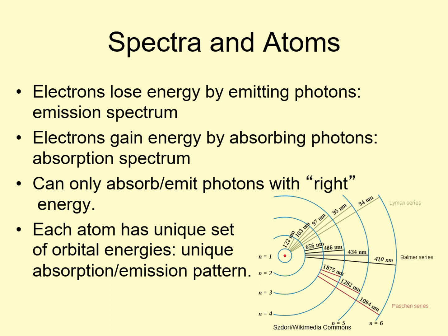Also notice that electrons don't just jump to the next level. They can jump one, two, three, or more levels at once, producing photons with more energy — hence shorter wavelengths — the farther they jump.